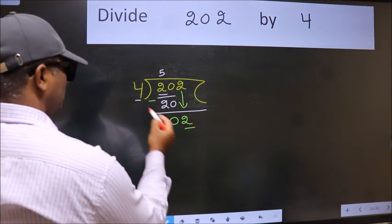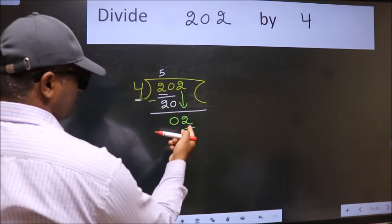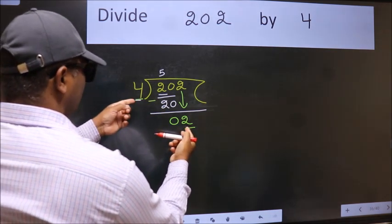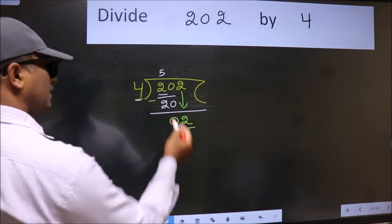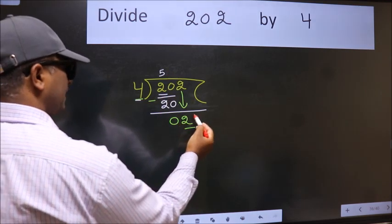Here we have 2 and here 4. 2 is smaller than 4. So what many do is, they directly put dot, take 0.